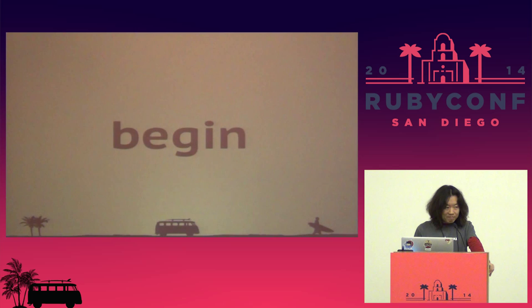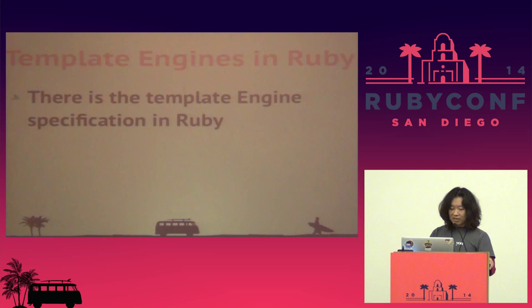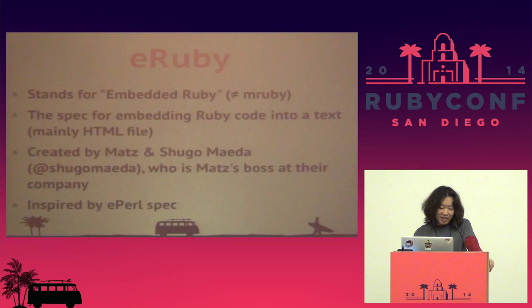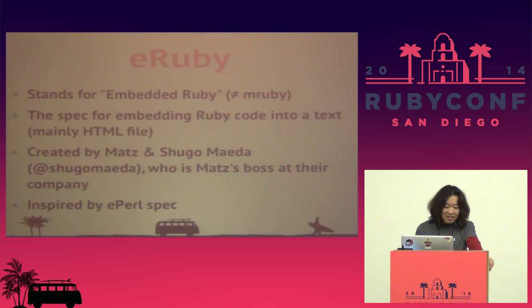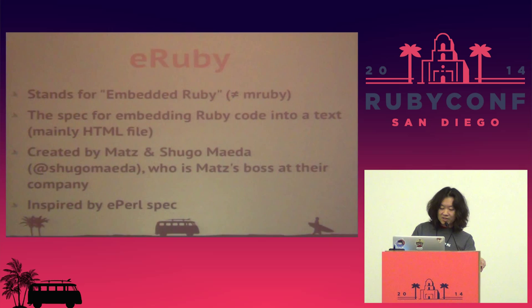This starts from ERB. First, I want you to know that there's a template engine specification in Ruby which is called eRuby. Have you heard about eRuby? eRuby stands for embedded Ruby. This is yet another embedded Ruby — it's a spec for embedding Ruby code into a text file like HTML files.